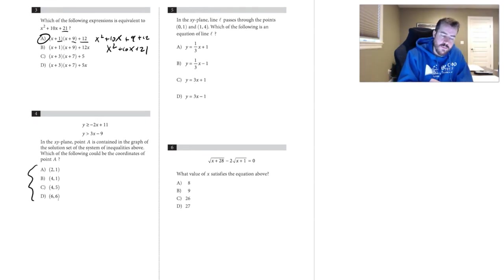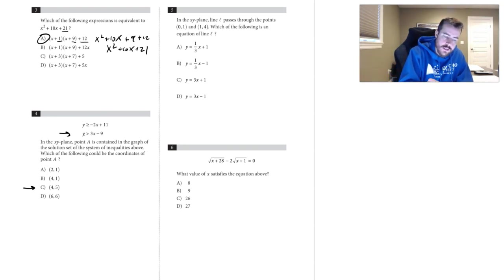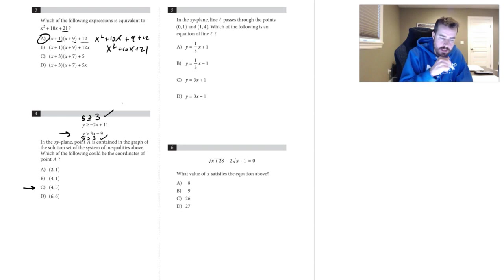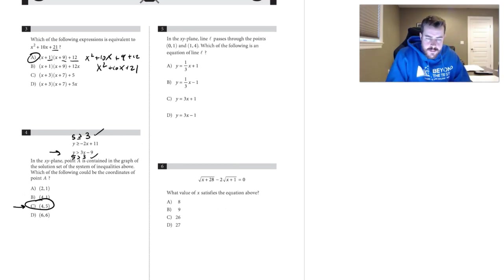Number four: use the answer choices to find what satisfies both inequalities. Starting with choice C and testing the second equation first — plugging in (5, 4): 5 is greater than 4 times 3 minus 9, which is 3. That works. Then for the top inequality: 5 is greater than or equal to negative 2 times 4 plus 11, which equals 3. Five is greater than 3, so it works for both. Choice C is correct.